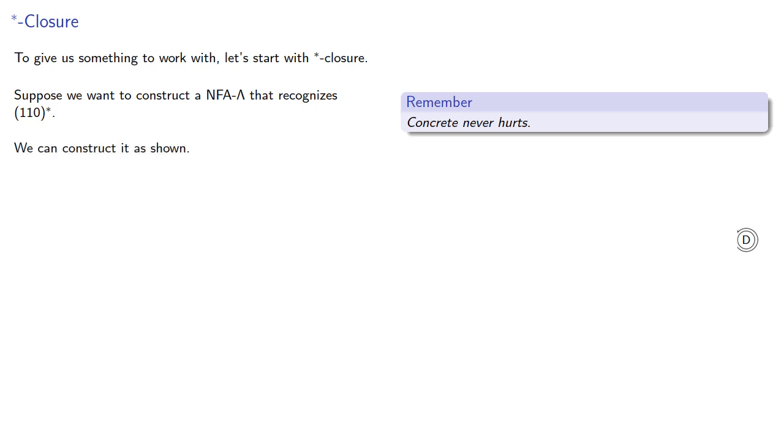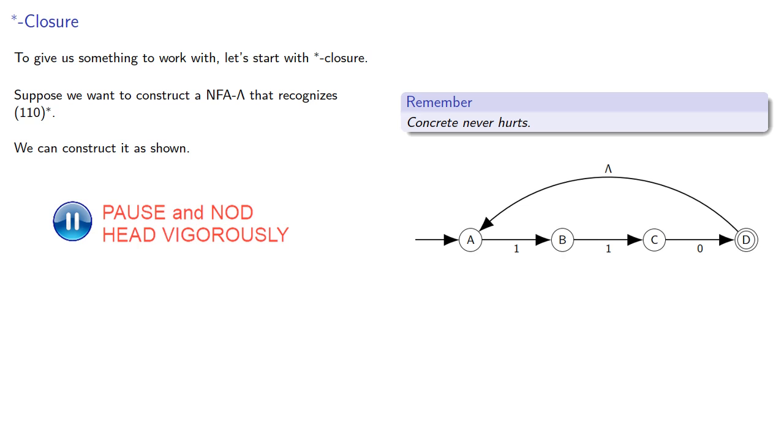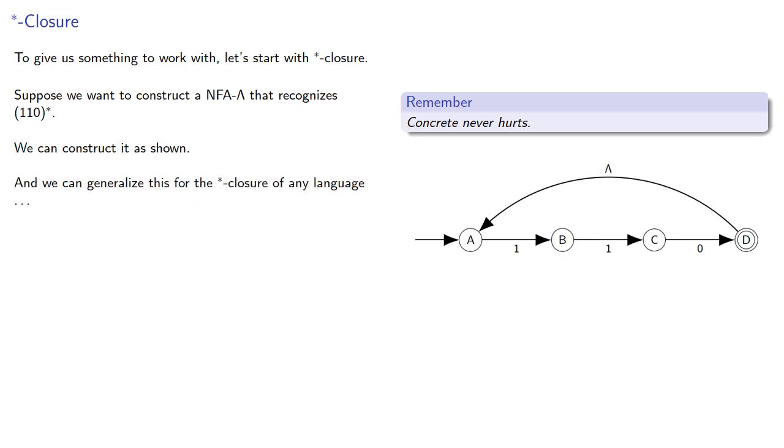We can construct it as shown, where we have a bunch of transition rules that will take us to an accepting state, at which point a lambda transition could take us back to the start. And we can generalize this for the star closure of any language, provided it's the star closure of a single element.